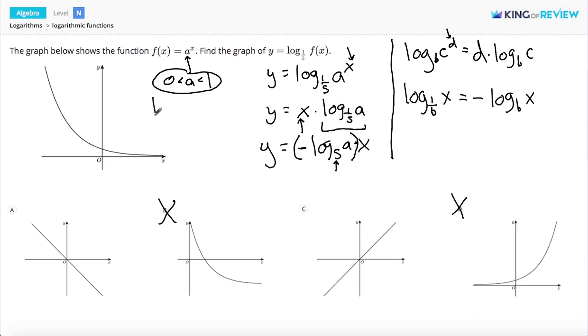The log base 5 of a is going to be less than 0. It'll be a negative number because you have to raise 5 to a negative exponent in order to get a number between 0 and 1, which is what a is.